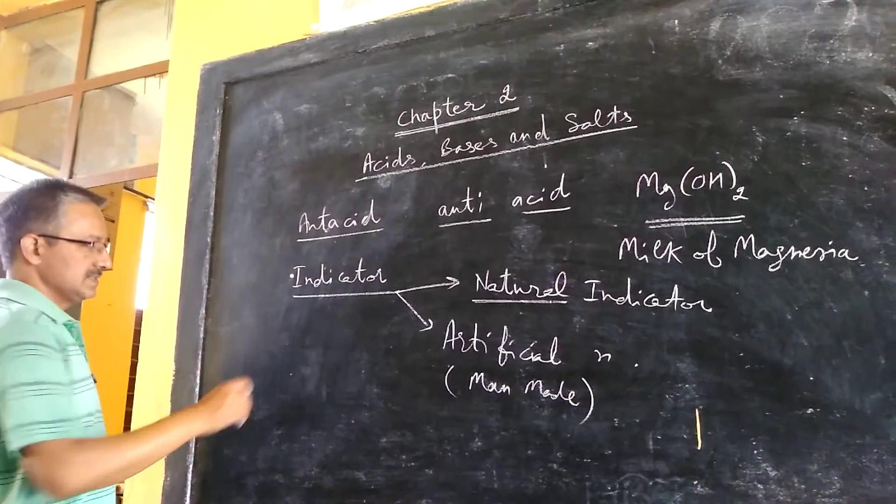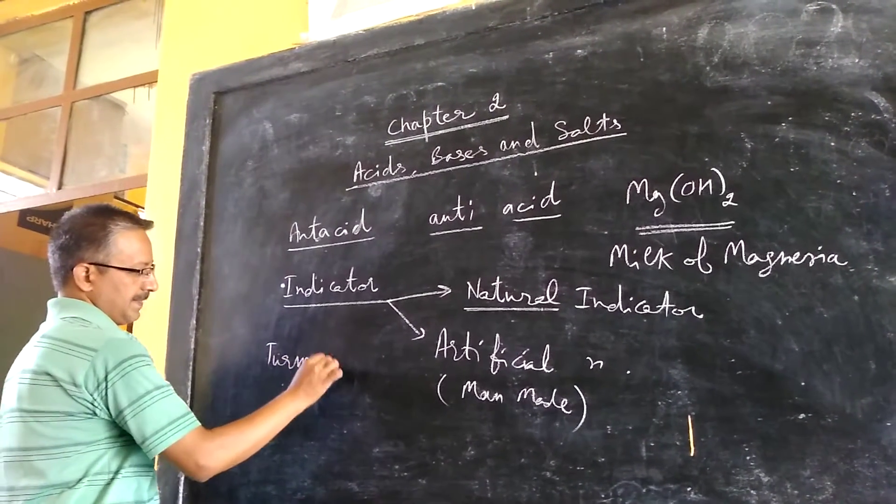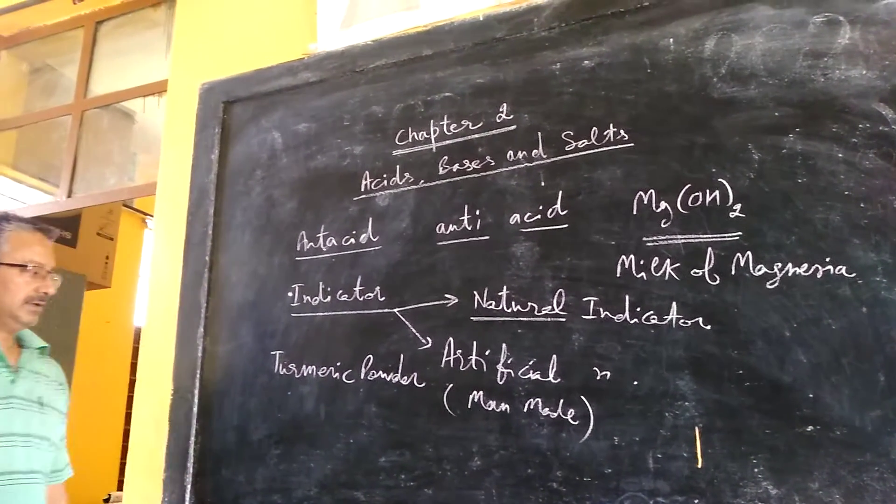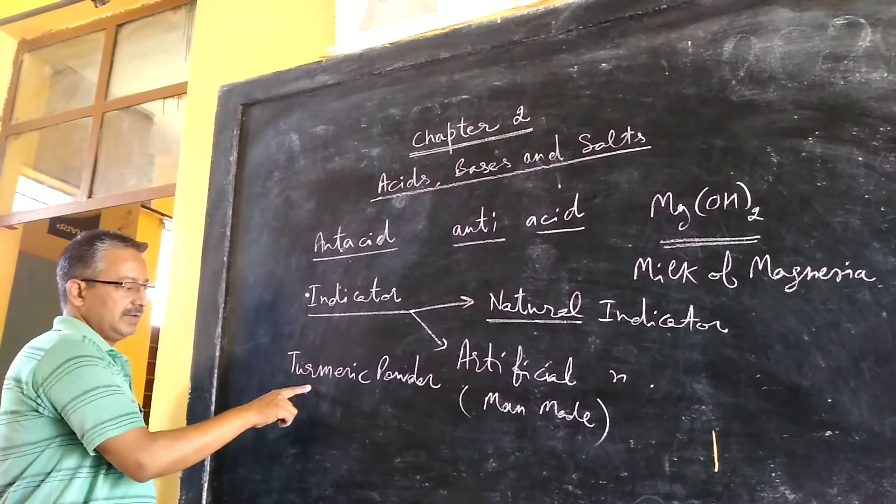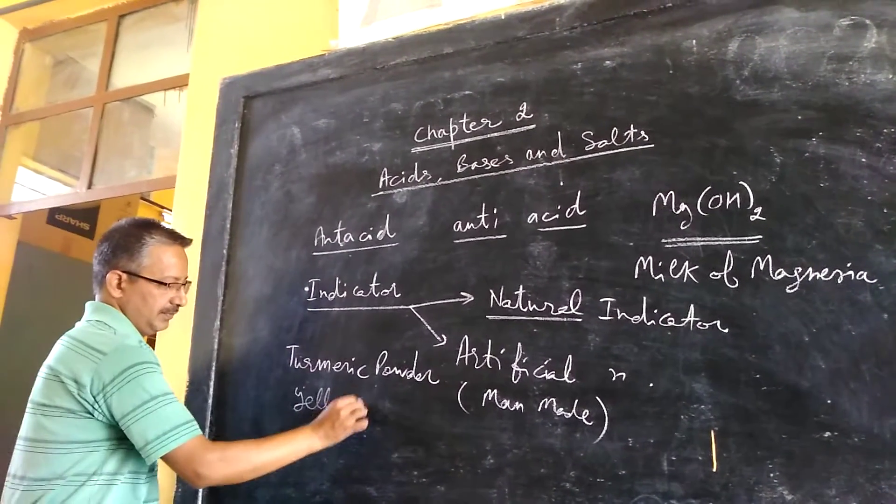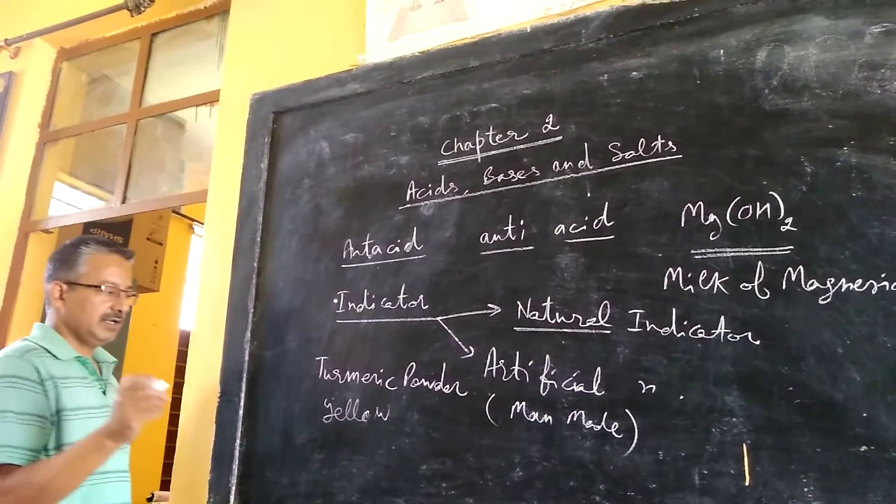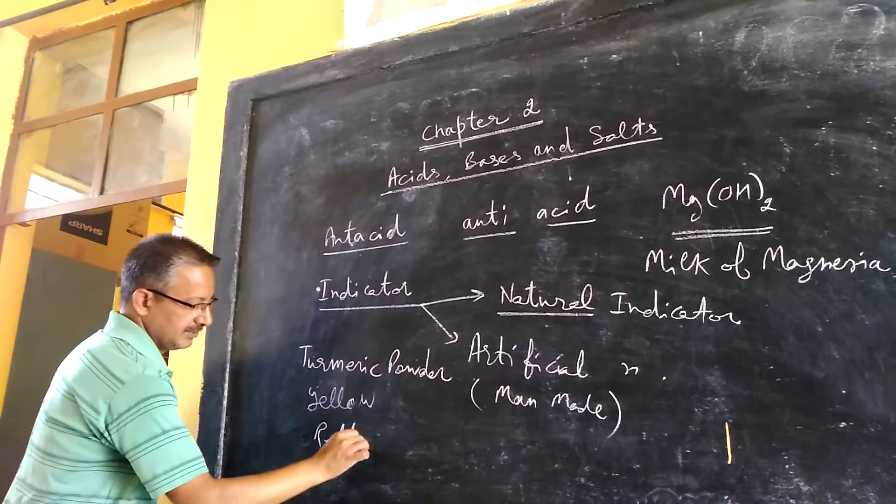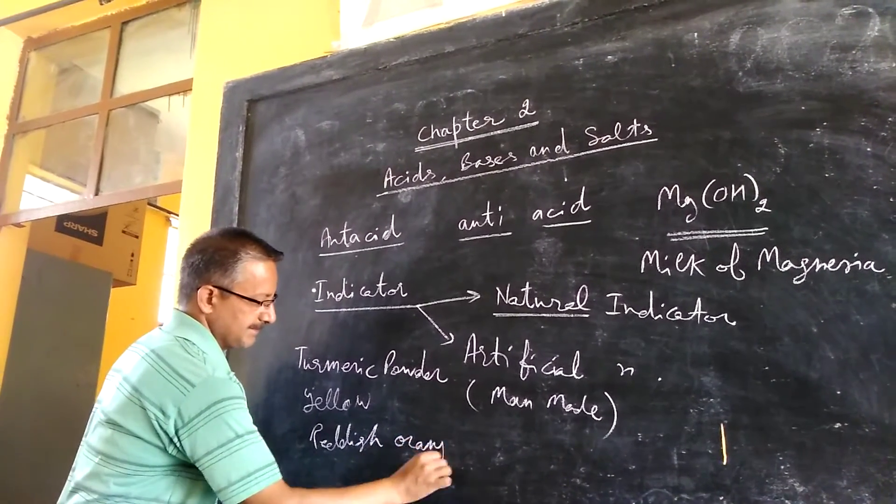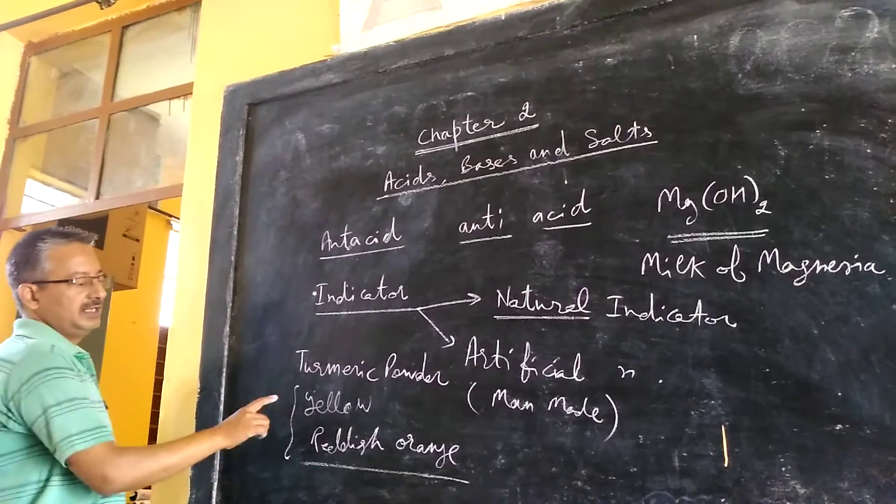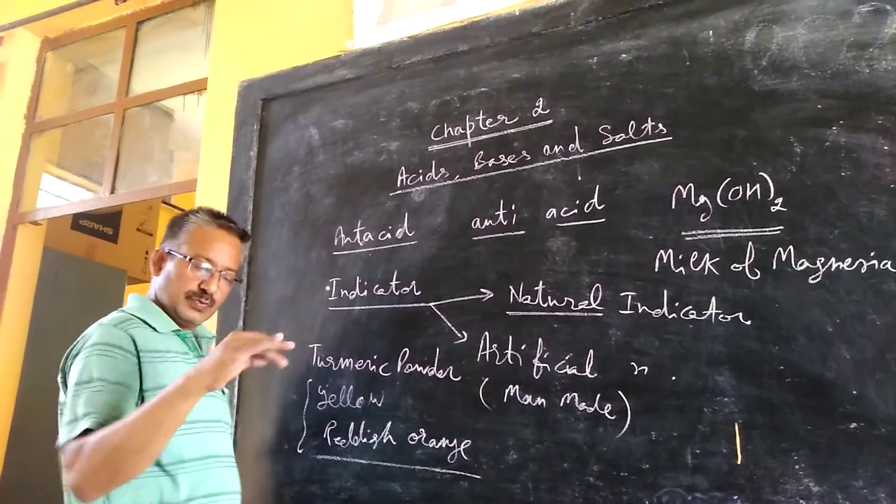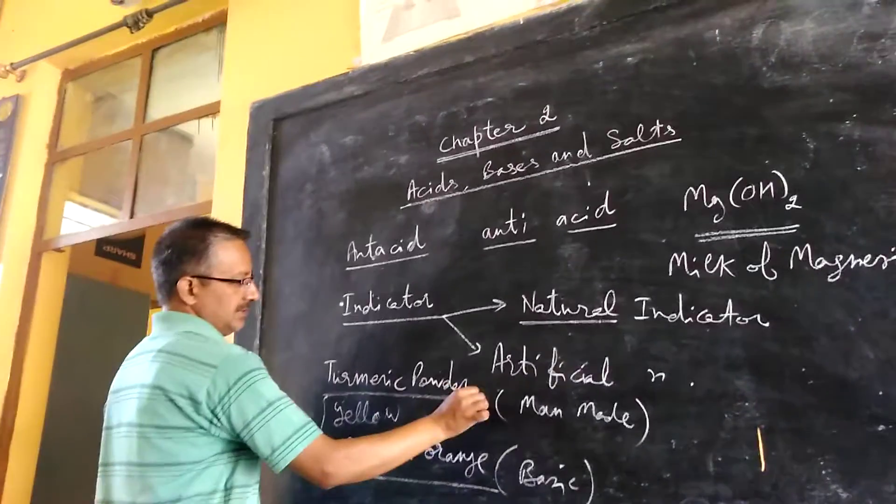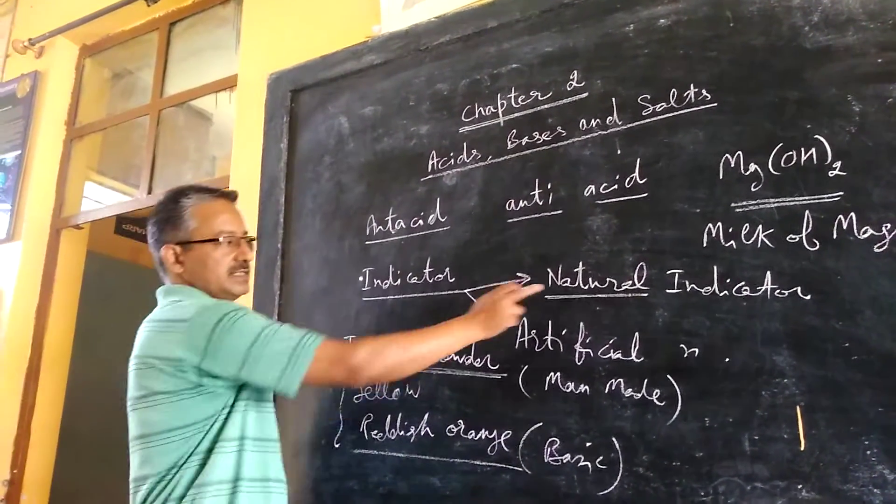A very common example of this is turmeric powder. You might have seen turmeric. Normally if there is a stain of turmeric on cloth then it appears yellow. The color changes to reddish orange type. So this change in color in different mediums—because soap is basically basic in nature—so in basic medium this is the color. So this substance will be termed as indicator, and since it is found in nature, so it is natural indicator.